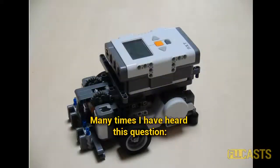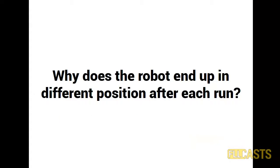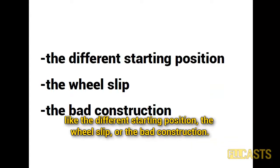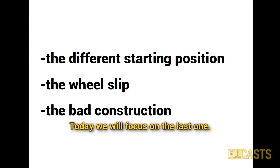Many times I have heard this question: why does the robot end up in a different position after each run? Well, there are many reasons for that, like the different starting position, the wheel slip, or the bad construction. Today we will focus on the last one.